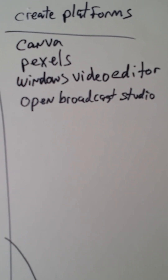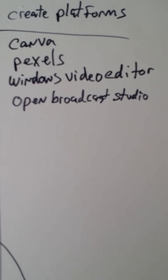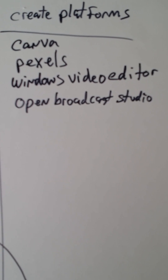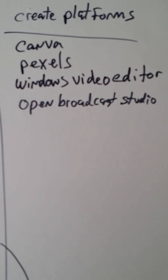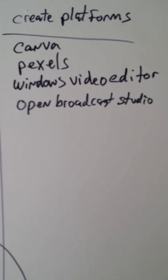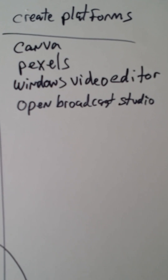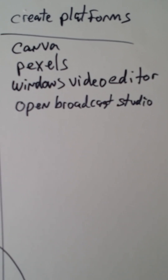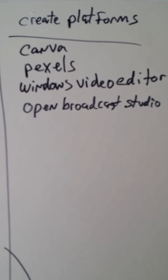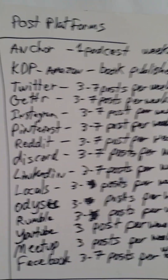Pexels is a royalty-free site for images. Windows Video Editor is a no-cost way to edit your videos. Open Broadcast Software is used to do screen share, and you can create audio with it as well — you just need a microphone. So with these tools you can create your own video and audio.